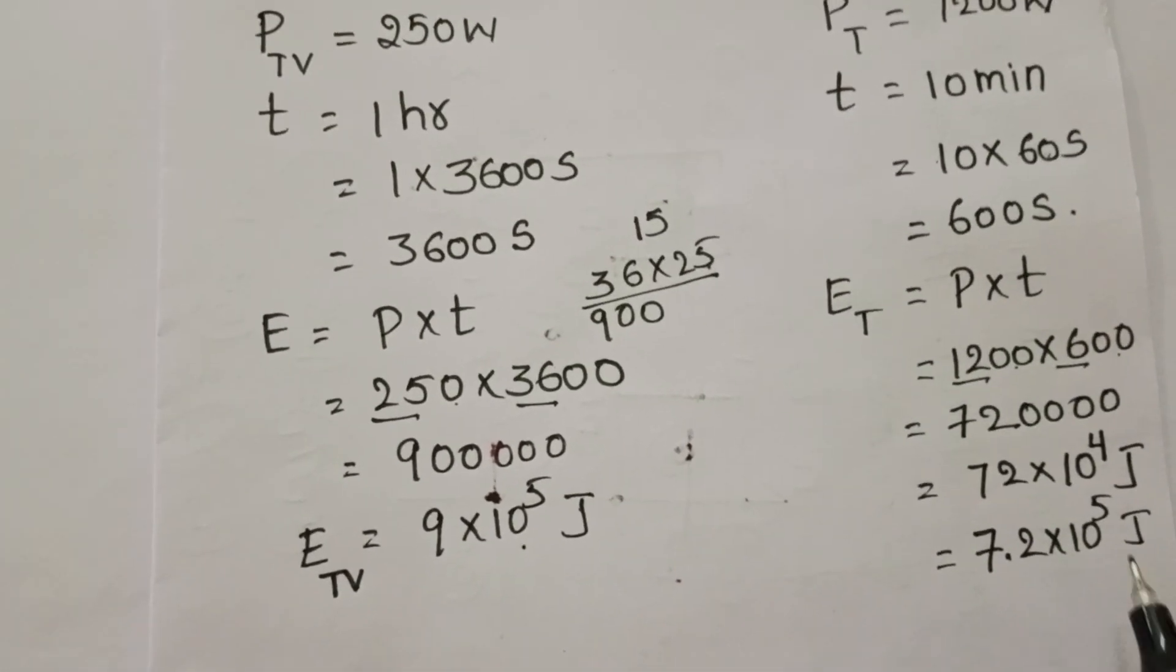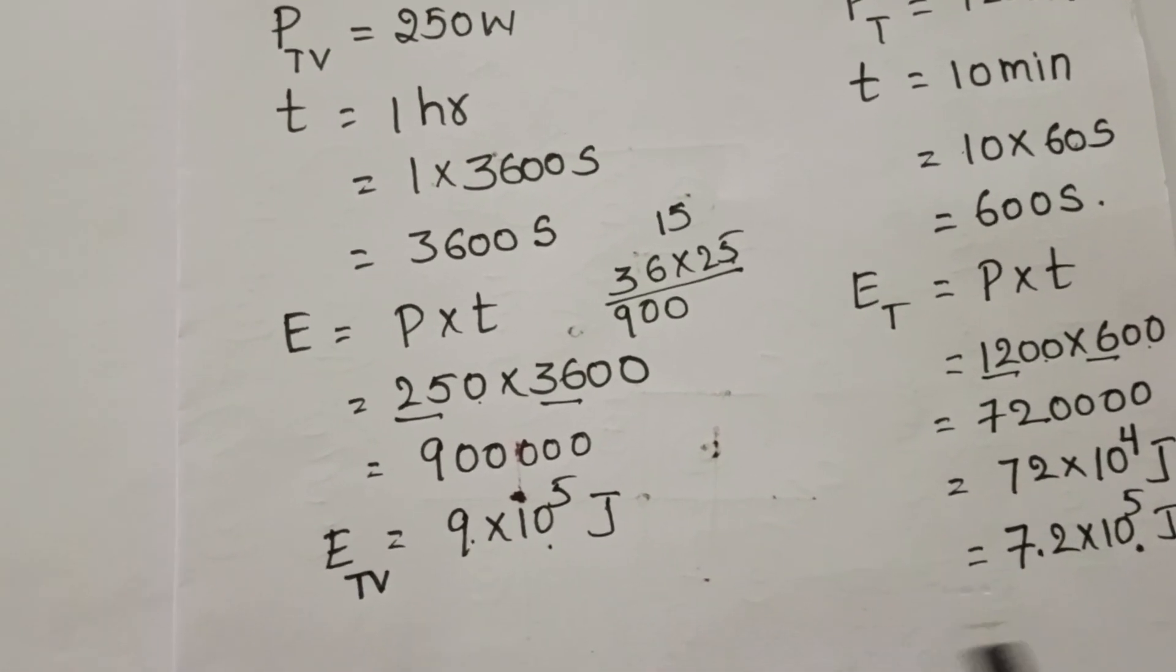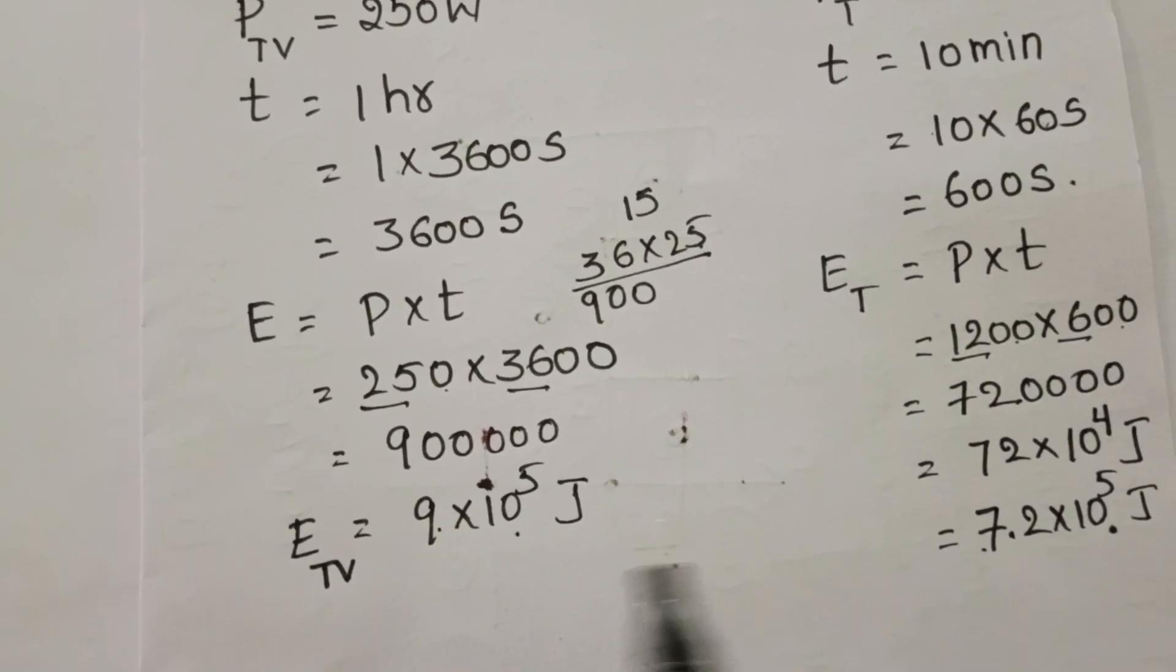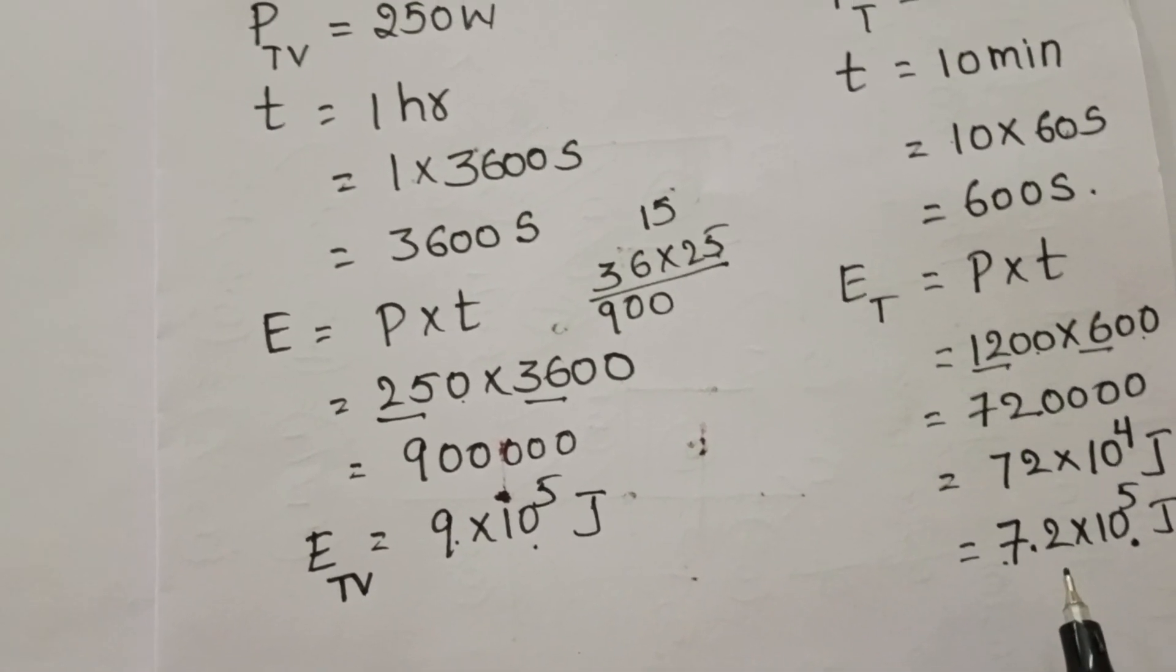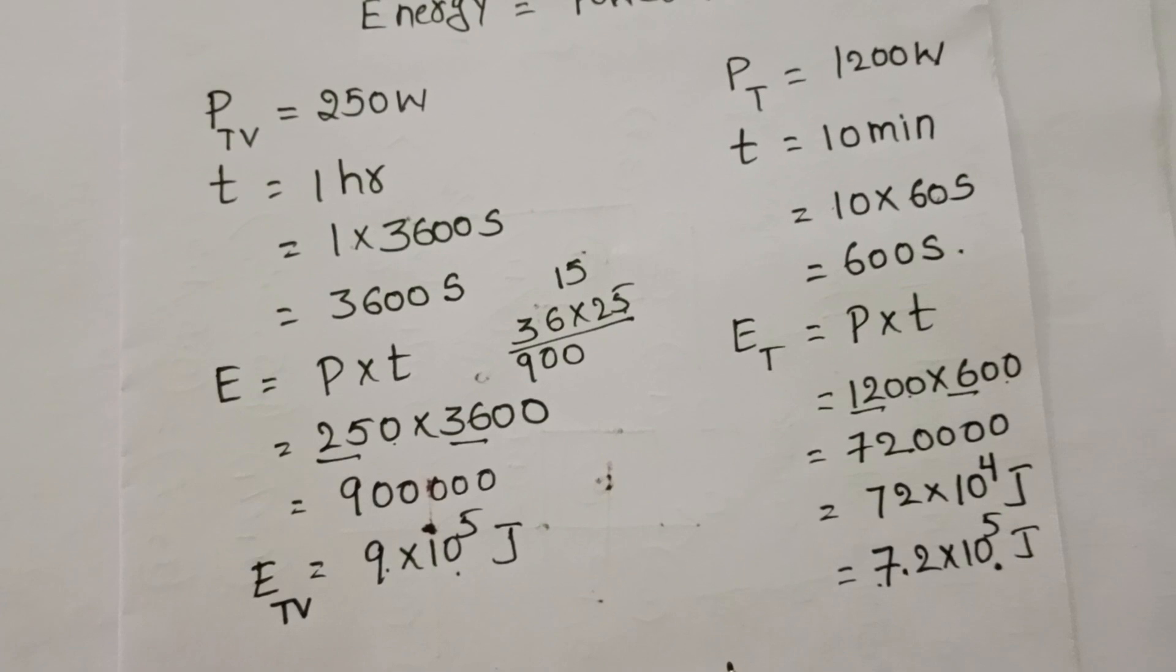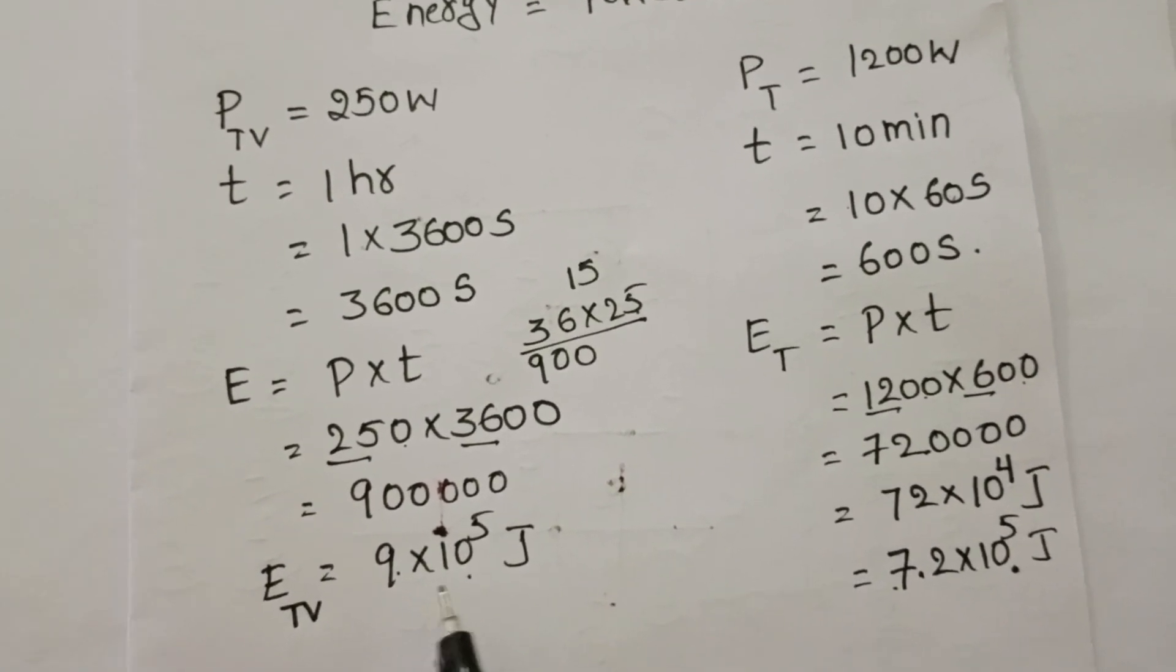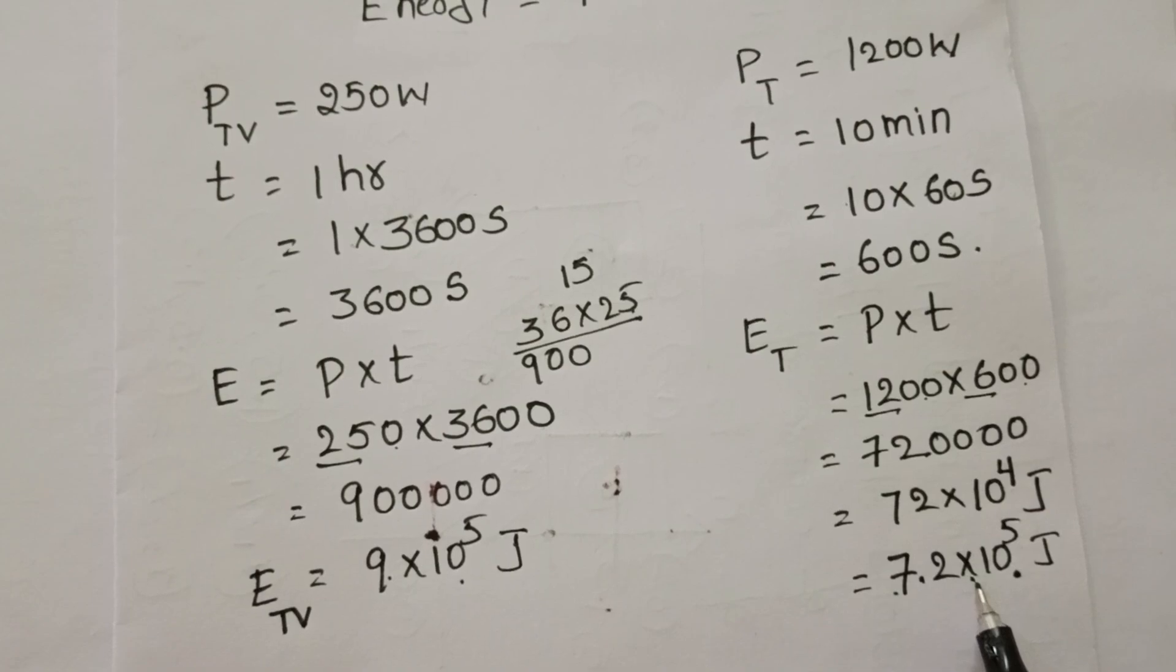Here also 10 power 5, 10 power 5. 9, 7.2. Now which one is greater? 9 is greater than 7.2. So which device utilizes more energy? TV set utilizes more energy when compared to the toaster.